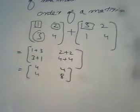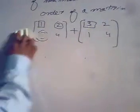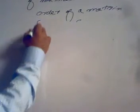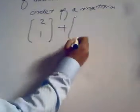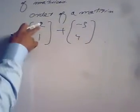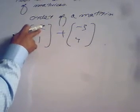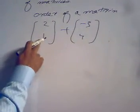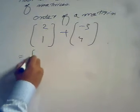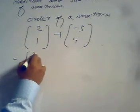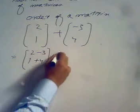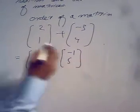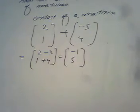Let's consider another example. Suppose we have matrix [2, 1] and we want to add it to [-3, 4]. The element corresponding to 2 is -3, and the element corresponding to 1 is 4. When we add them we get 2 plus (-3) and 1 plus 4, so the resultant matrix is [-1, 5].